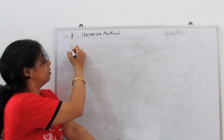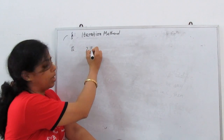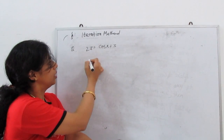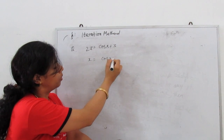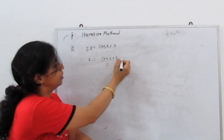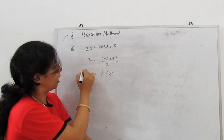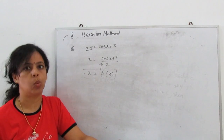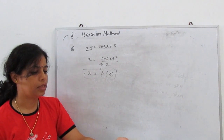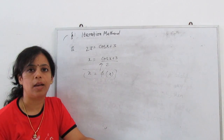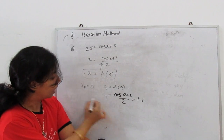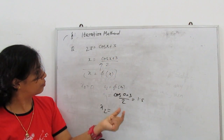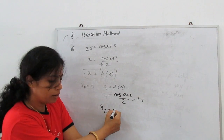First problem: find the root of the equation 2x = cos(x) + 3 using the iteration method. We rearrange: x = (cos(x) + 3)/2. So our φ(x) = (cos(x) + 3)/2. We start the iteration taking x₀ = 0.5. Then x₂: substitute 1.5 and find the value — it gives 1.535.